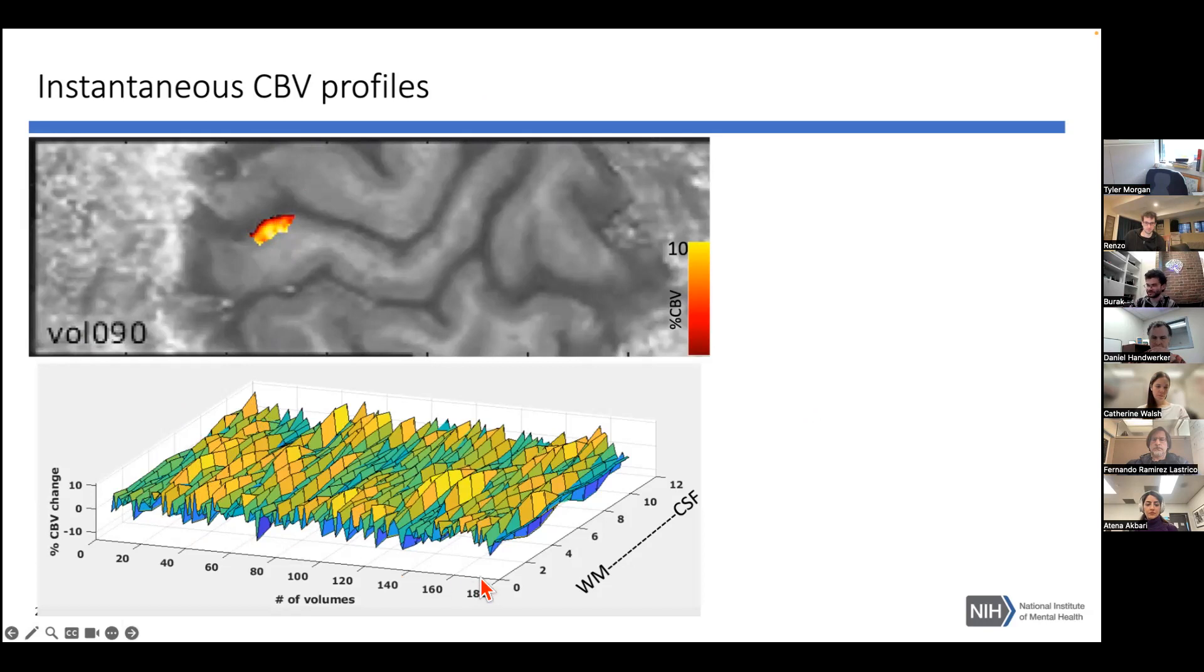There's a number of volumes, in this case 10 minutes of scan, TR is about 3.5 seconds, and it's percent change of CBV versus cortical depth.